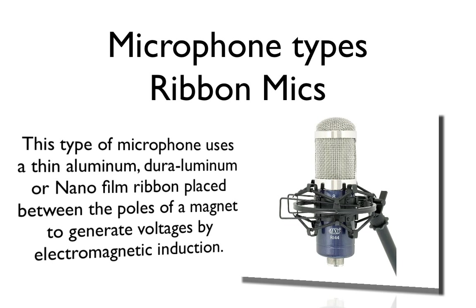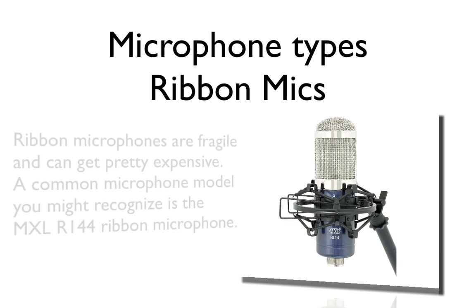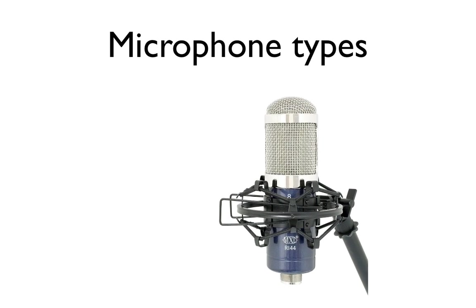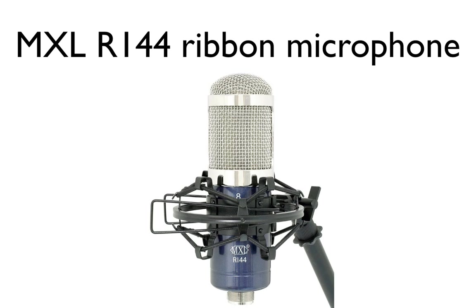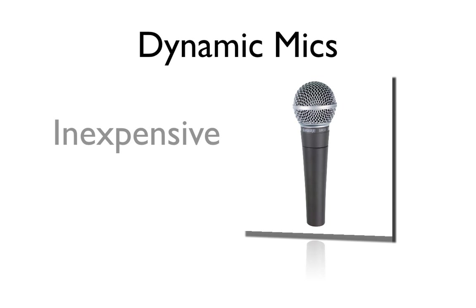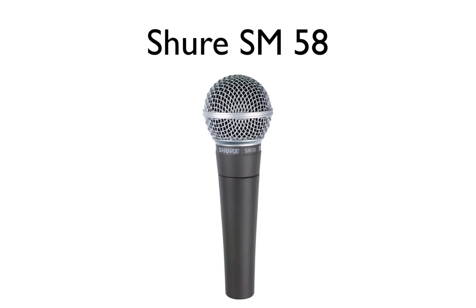This type of microphone uses a thin aluminum, duroaluminum, or nanofilm ribbon placed between poles of a magnet to generate voltages by electromagnetic induction. Ribbon microphones are fragile and actually can get pretty expensive. Here's a common microphone that you might recognize: it's the MXL R1-44 ribbon microphone. Let's go ahead and talk about dynamic microphones. Dynamic microphones have a thin diaphragm that's hung by suspension wires. This is a relatively inexpensive microphone option. It's usually used for live performances, and here's a very common one you might recognize: the Shure SM58.